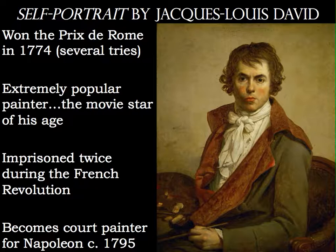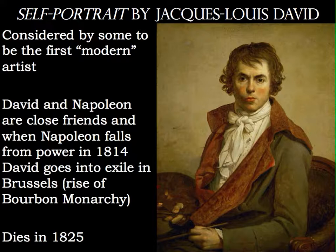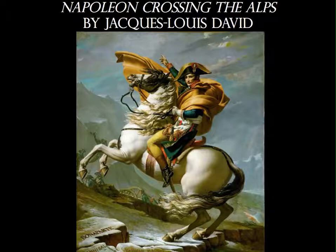Romanticism deals with the exploration of emotion, expression, and imagination. The subject matter comes from a variety of sources such as literature, current events, and even the artist's imagination. Jacques-Louis David, the most famous neoclassical painter, also created paintings considered Romantic. He was an extremely popular painter — artists of this era were like celebrities, almost unable to walk the streets. He was imprisoned twice during the French Revolution, became friends with Napoleon, and became his court painter around 1795. He is considered by some to be the first modern artist.